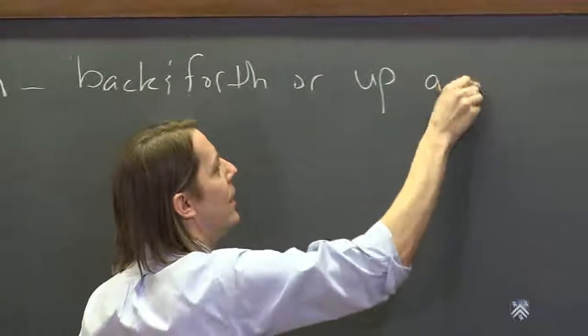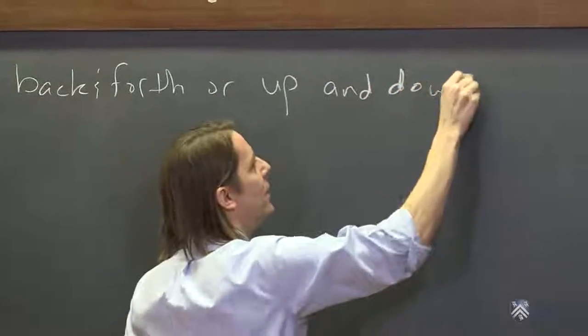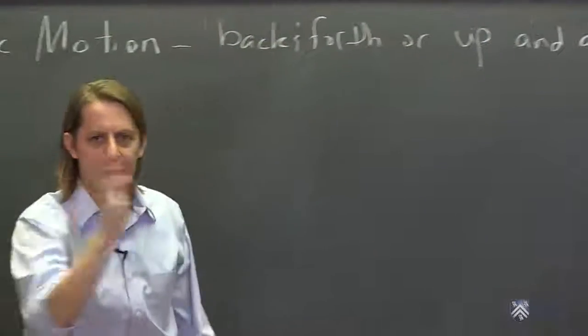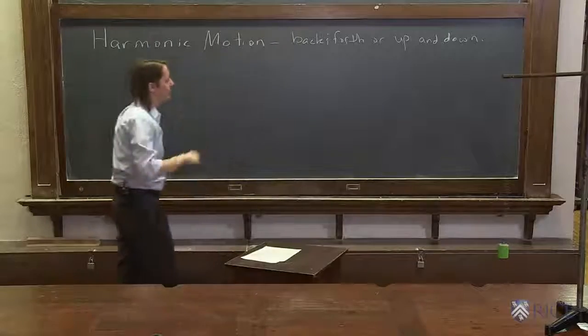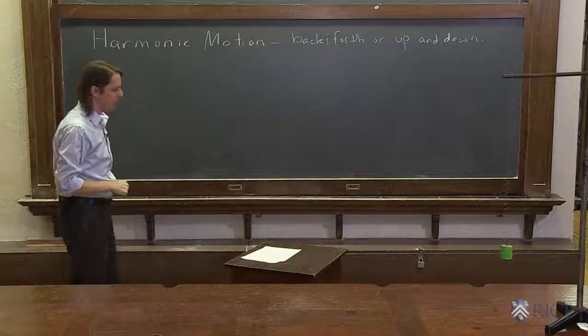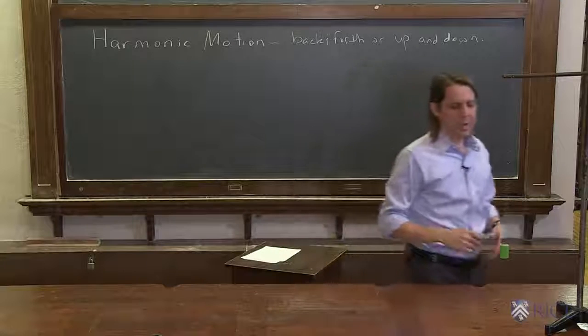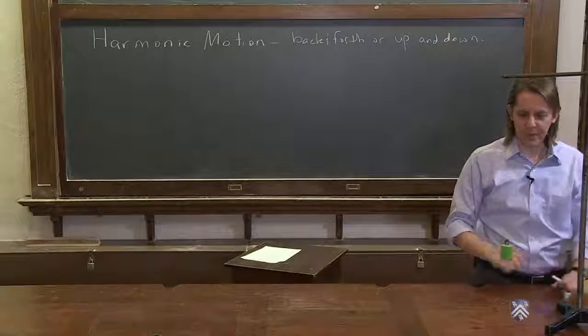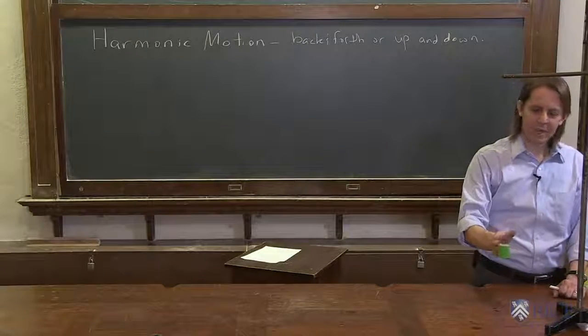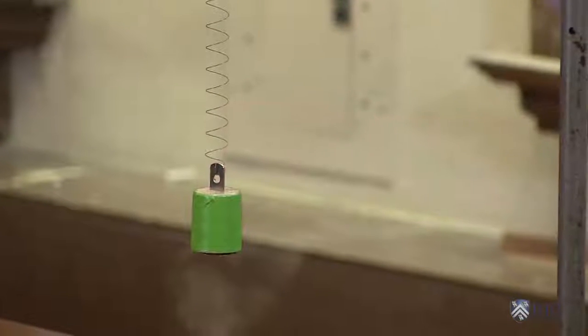The way it is different from a trajectory is it returns to its original position and does it over and over again. We're going to talk about harmonic motion with a mass on a spring. It's a standard way you begin to look at it. Here we have a mass, 500 grams, hanging from a spring.